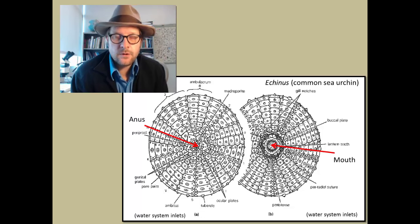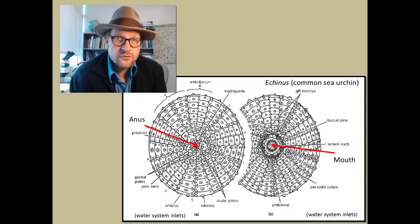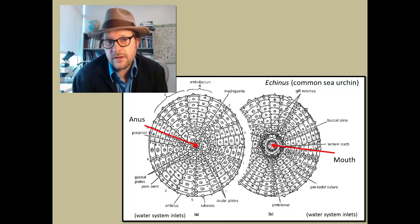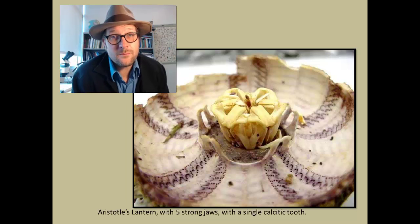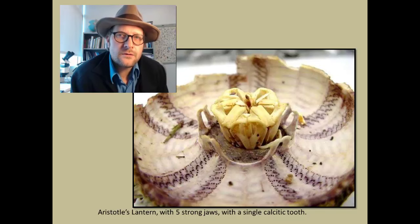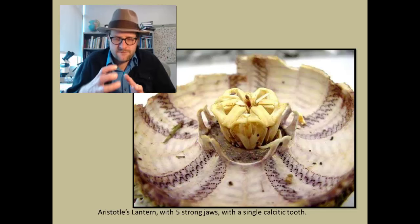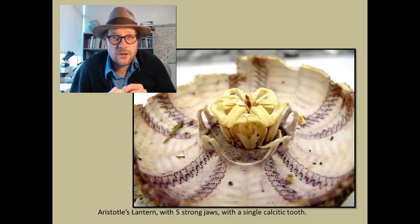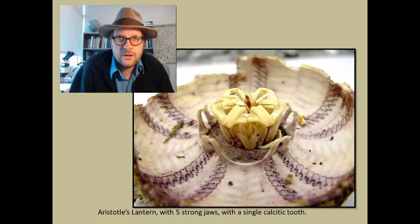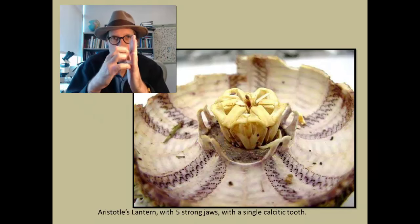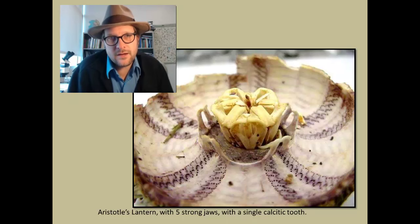A gut tube extends through the center of the animal. Each pore in the skeleton, called a test, is for the water-driven tube feet that extend through those pore openings and can retract when fluid is withdrawn from the feet, particularly at the bottom surface in contact with the ocean floor. One of the most remarkable features is the masticatory apparatus called Aristotle's lantern — an arrangement of five strong jaws, each with a sharp calcitic tooth, driven by a pyrognathic girdle that draws the teeth together to rasp or scrape at food, which is then passed down the gut tube.